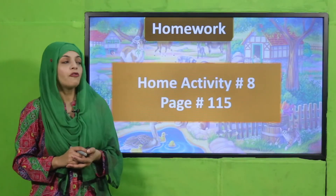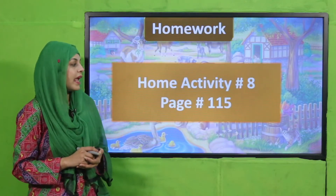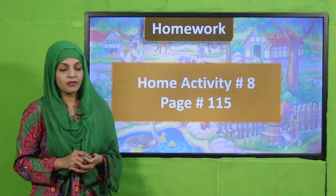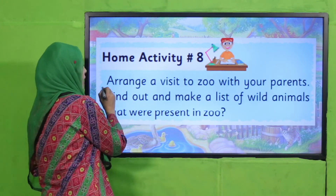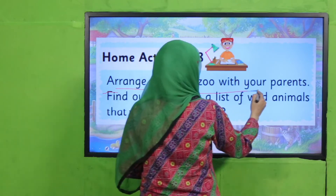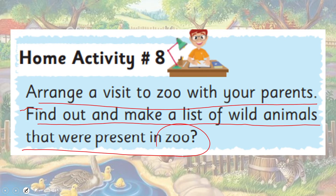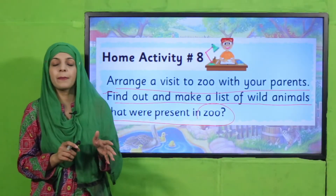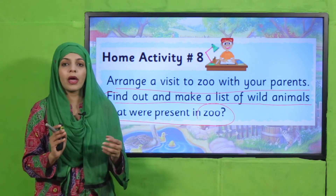For homework, you will do home activity number 8 on page 115. Students will arrange a visit to the zoo with their parents and make a list of wild animals present in the zoo. This is a very fun activity — the zoo management brings wild animals from the jungle and keeps them in cages so we can observe them.